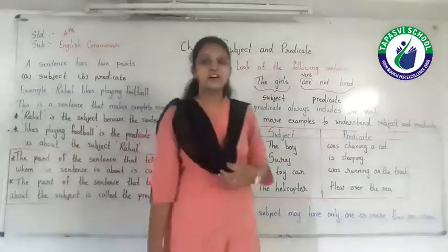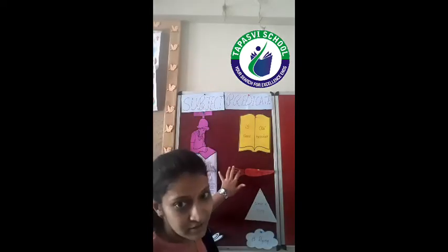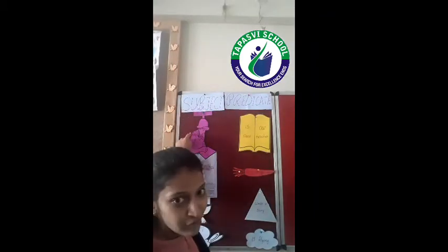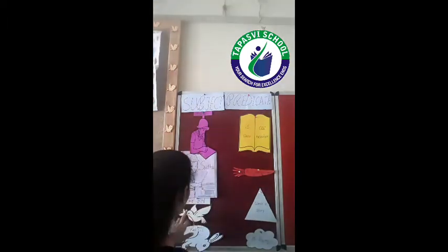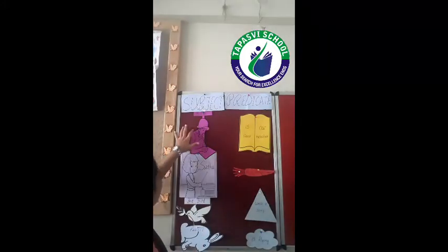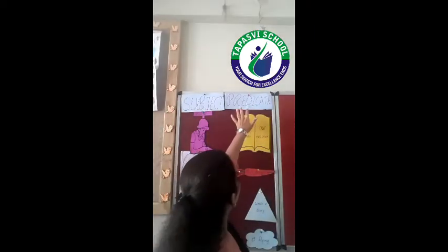In this topic we have learned what is subject and what is predicate. Now students, we will do an activity on subject and predicate. I have stuck some pictures here — in the first column, Subject, there are pictures of Mohan, Sudha — who is a teacher — a bird, and a rabbit. In the second column, Predicate, there are also four pictures.